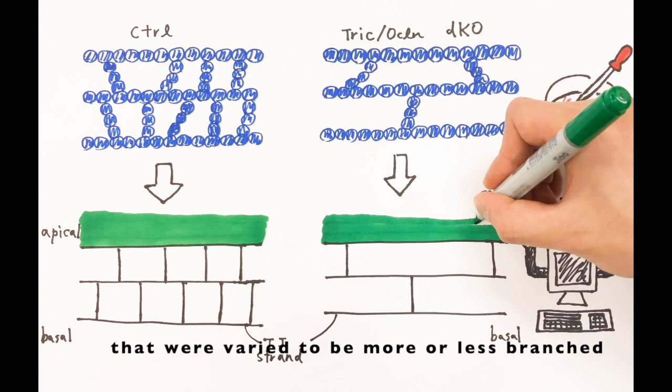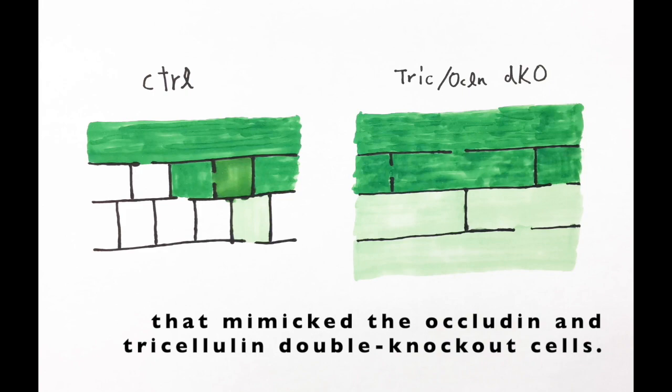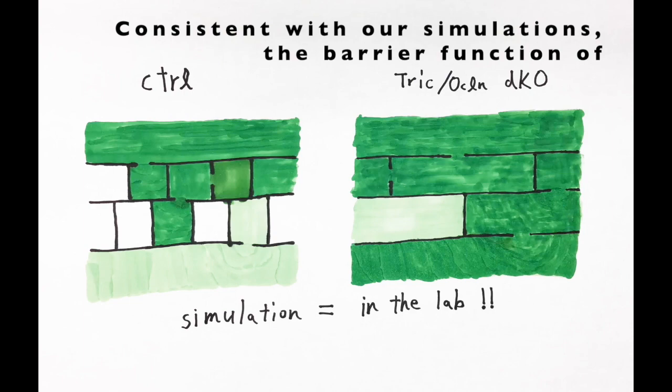Our simulation predicted that the permeability of solute was increased in simpler network models with less cross-links that mimic the occludin and tricellulin double knockout cells. Consistent with our simulations, the barrier function of occludin and tricellulin double knockout cells was also compromised.